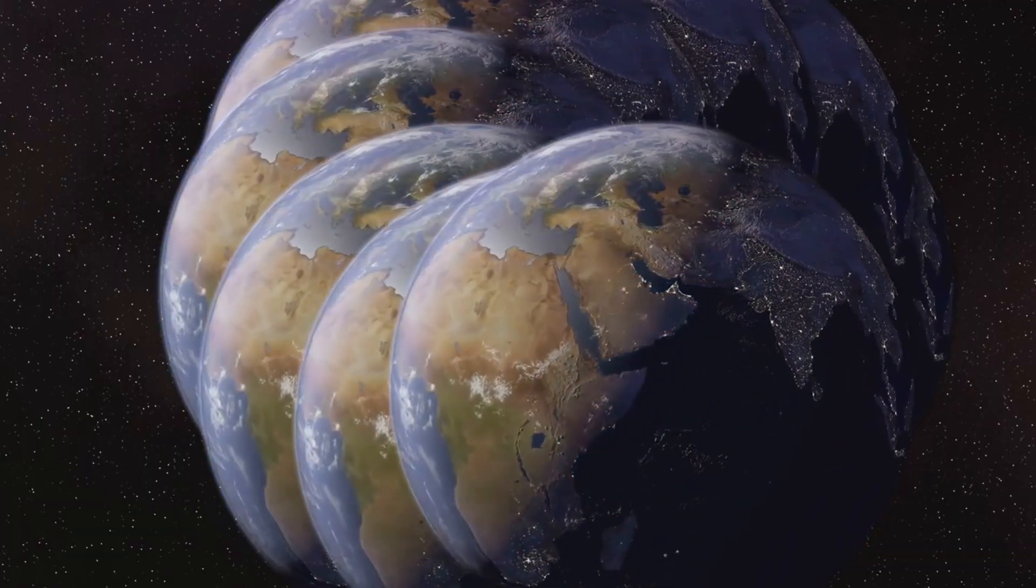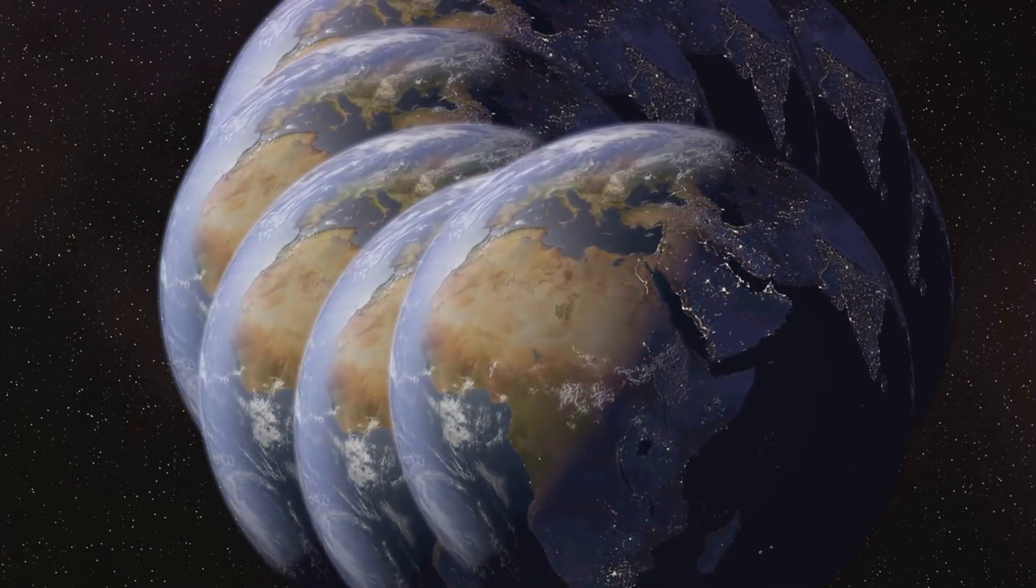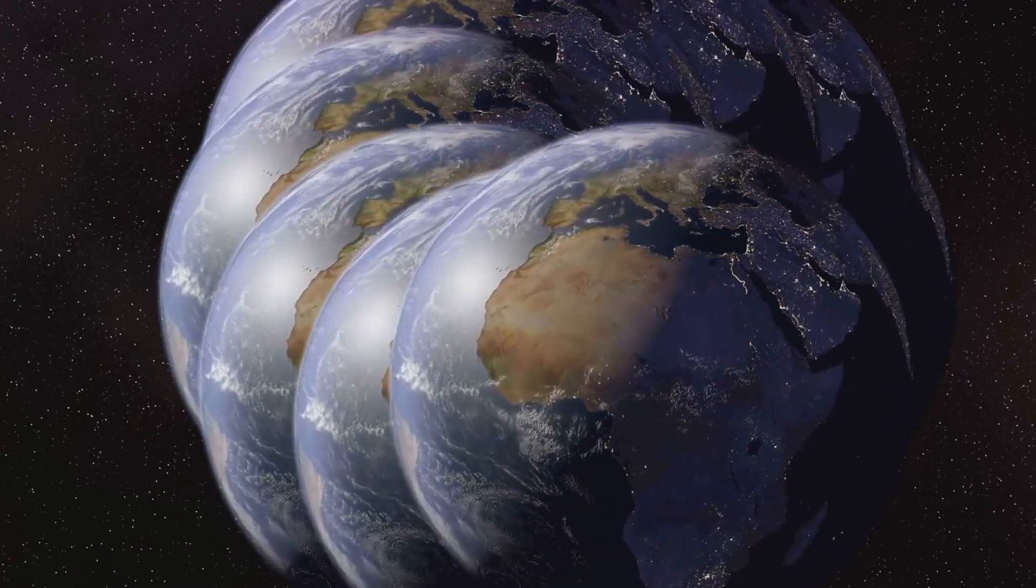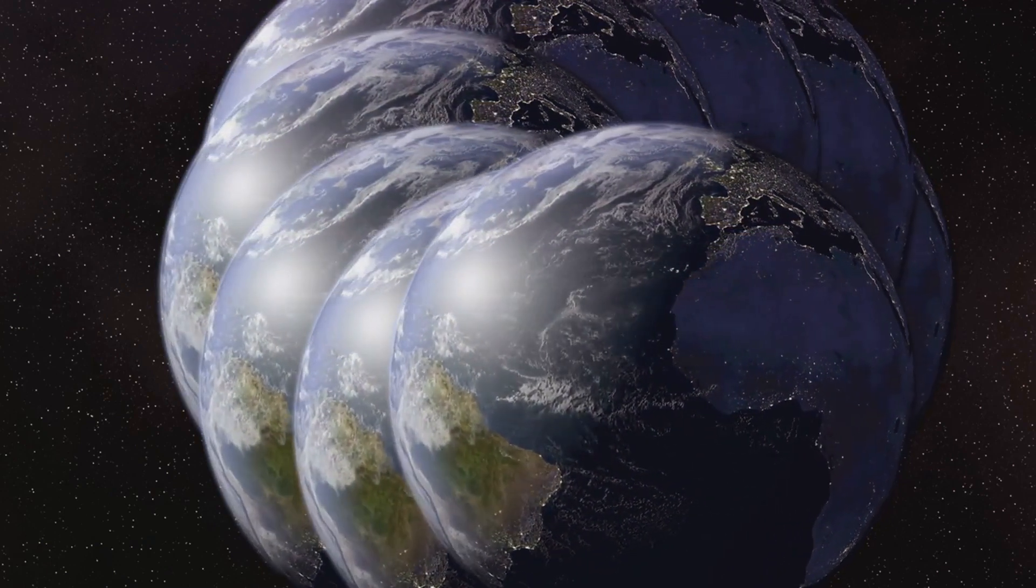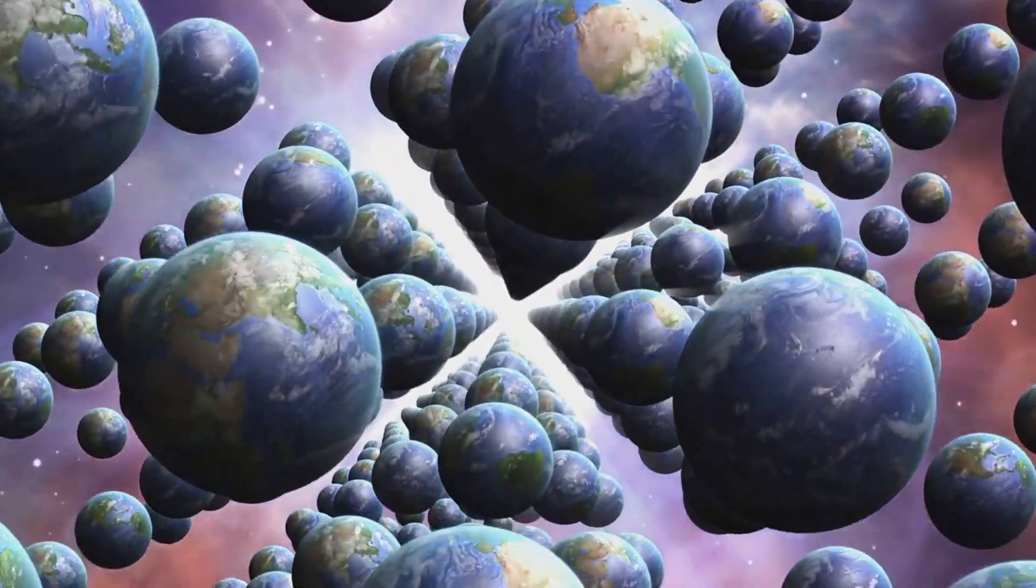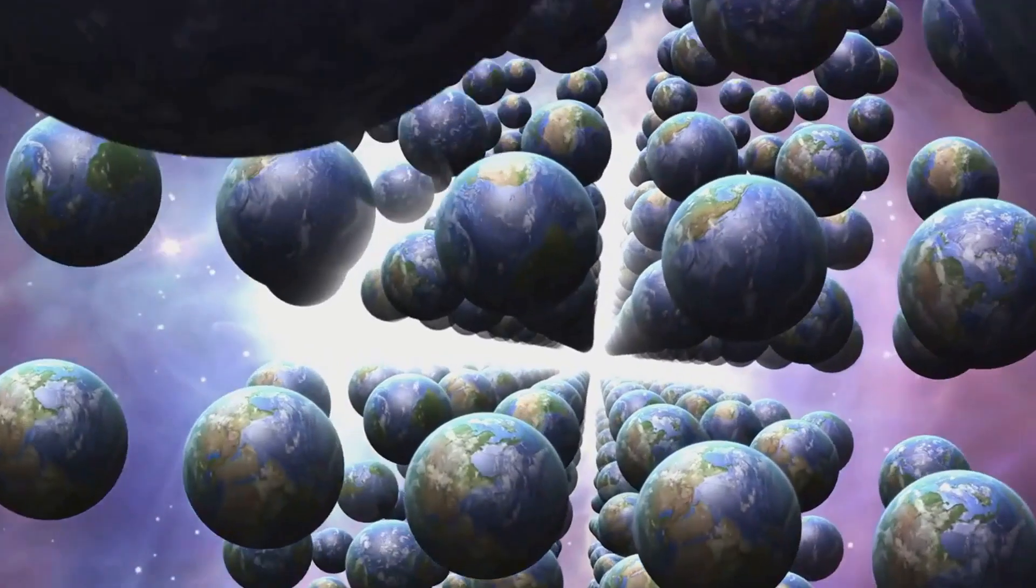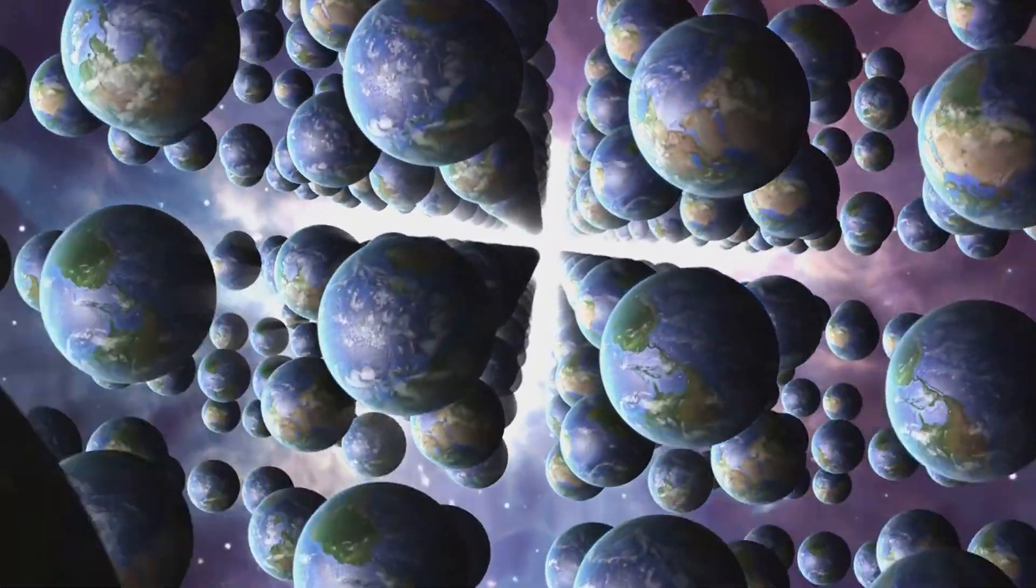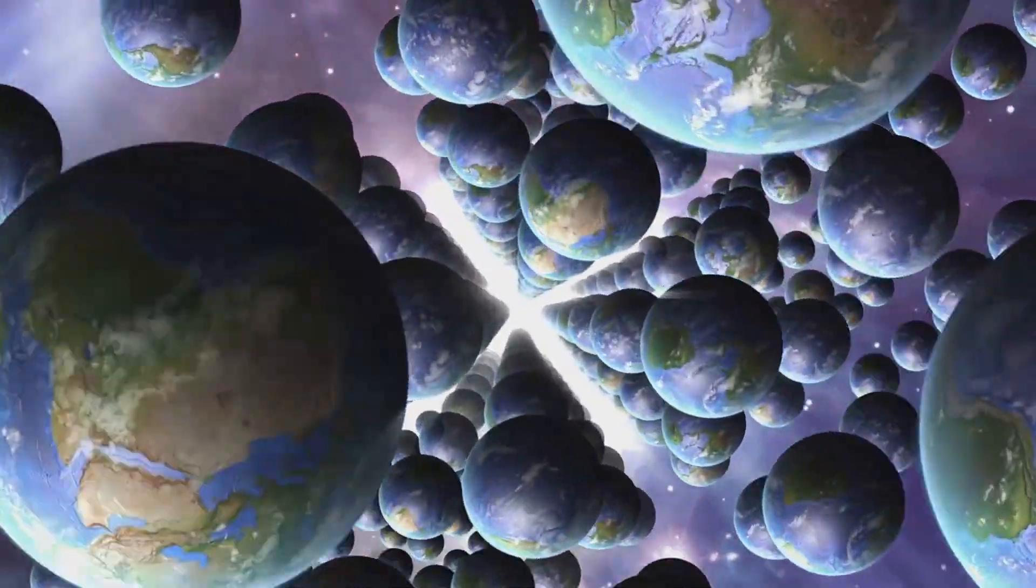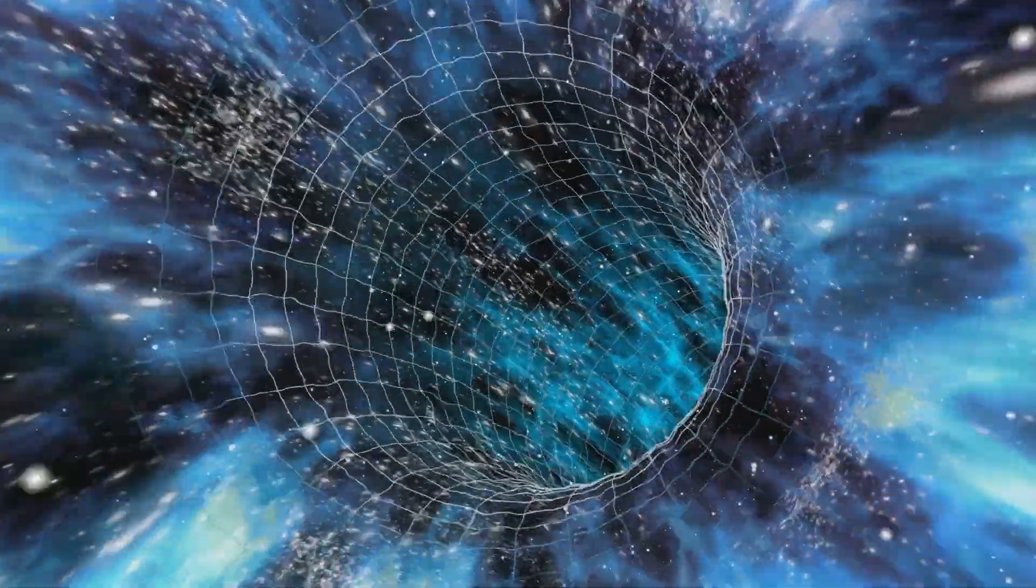Next, we have the enigmatic world of quantum mechanics. According to the many-worlds interpretation, every time a quantum event happens, the universe splits into different versions. In one universe, the event happened. In another, it didn't. This would mean that there are an infinite number of universes, each representing a different outcome of every possible event.